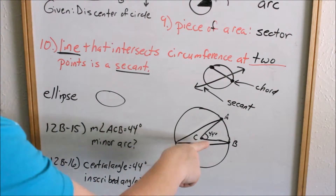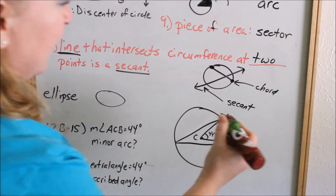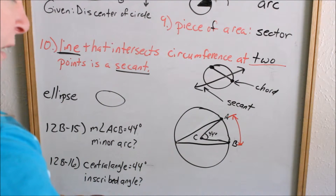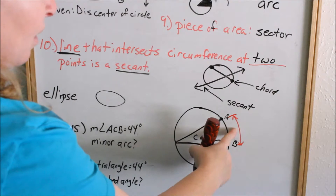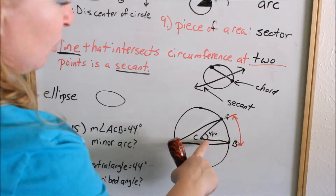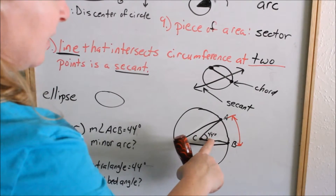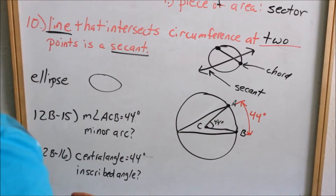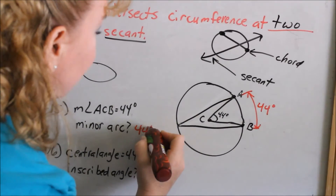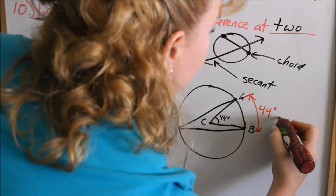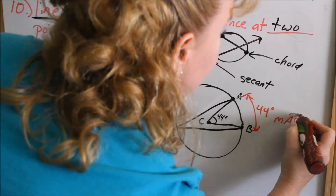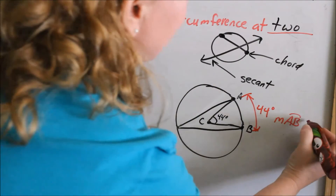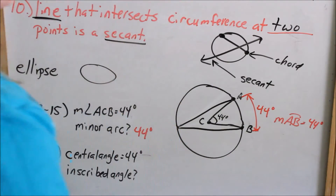Whenever you have a central angle, the arc from A to B out here is called the minor arc. Arcs are measured in degrees, just like angles. This minor arc will be the same measurement as the central angle. So if ACB, the central angle, is 44 degrees, this arc is also 44 degrees. The measure of arc AB — written with an arc symbol above AB — equals 44 degrees. That is the minor arc.